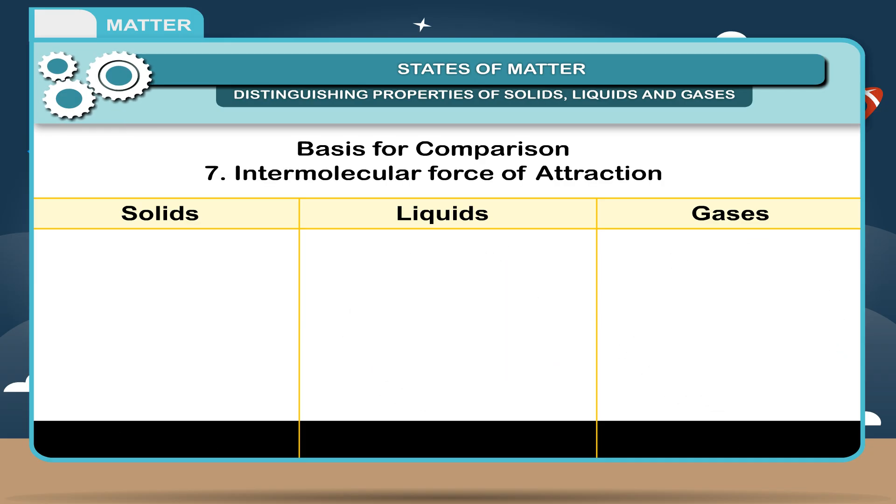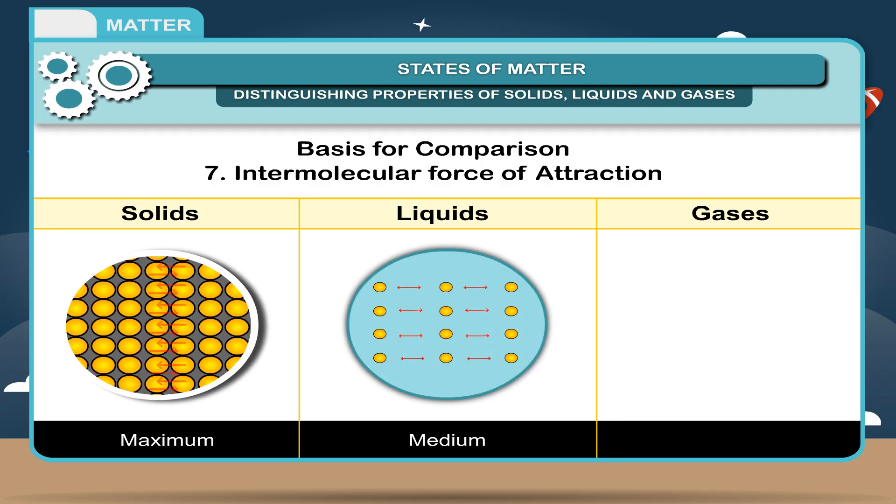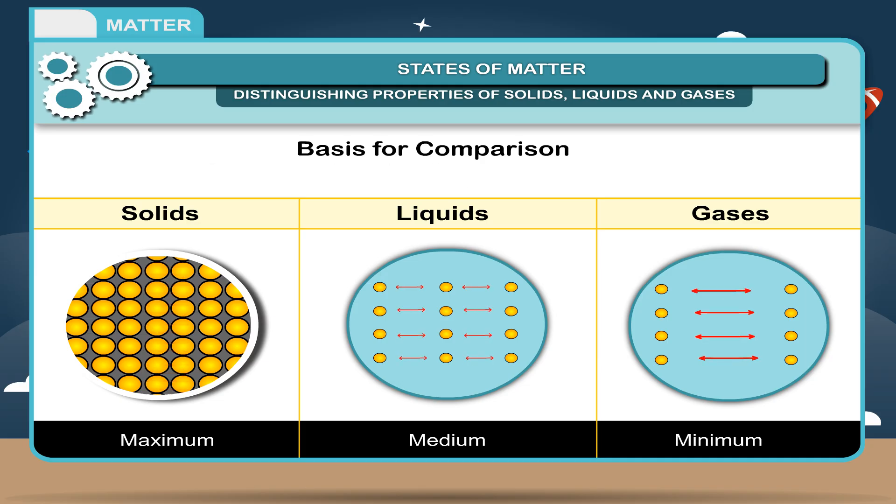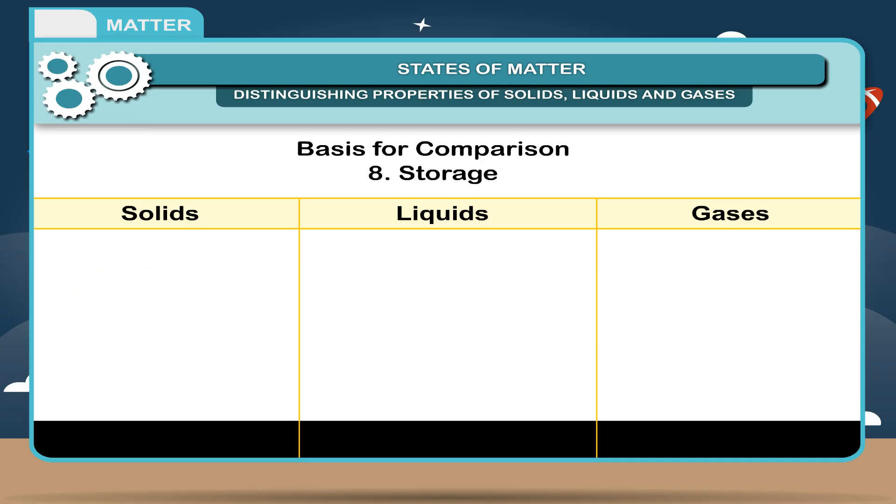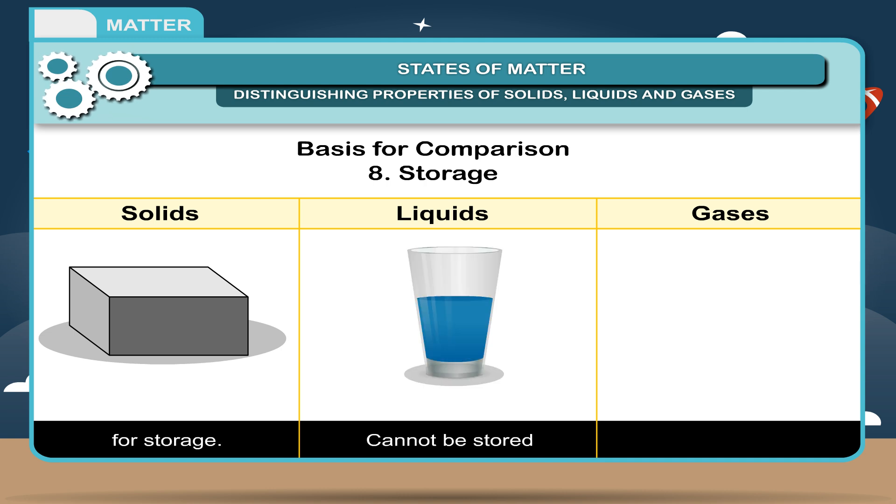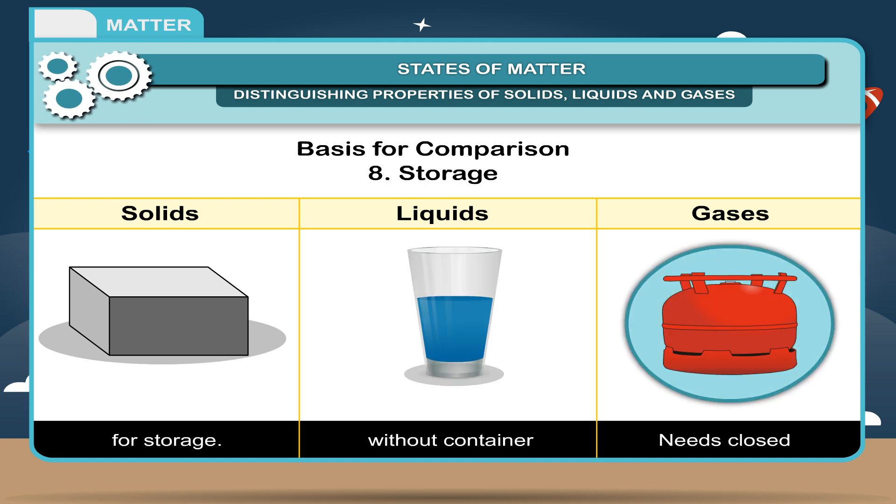7. Intermolecular force of attraction: Maximum for solids, medium for liquids, minimum for gases. 8. Storage: Solids don't need a container for storage. Liquids cannot be stored without a container. Gases need a closed container for storage.